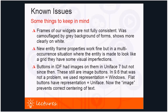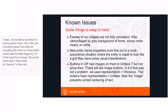Because this project was done on a budget, it's not perfect. There are some known issues: the frames of widgets are not fully consistent — this was camouflaged by the gray background but shows more clearly on white. New entity frame properties work fine, but in multi-occurring situations where an entity is made to look like a grid, there are some visual imperfections. Third, buttons in the IDF used to have images in Universe 7 but not since then; in 96 there was no problem because representation was set to Windows for buttons, but flat buttons use representation equals Universe, so the image prevents correct centering of the text.